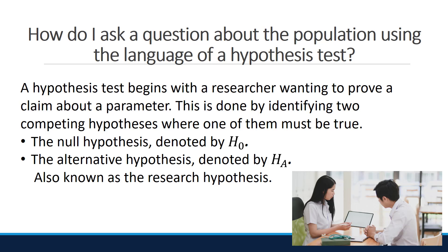Helpful hints: we usually identify the alternative hypothesis first. The alternative is what we want to know about the population or parameter — the alternative is the research question. This is why it is known as the research hypothesis.